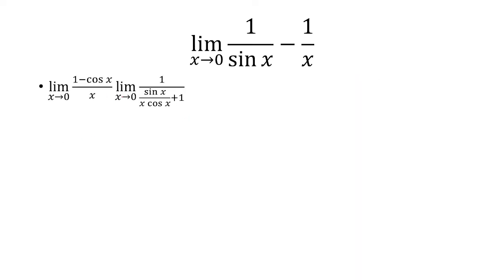At this step, I'm going to combine these into one limit, which is really just taking the limit as x approaches 0 of 1 minus cosine of x over x, and dividing it by the limit as x approaches 0 of sine of x over x cosine of x plus 1.